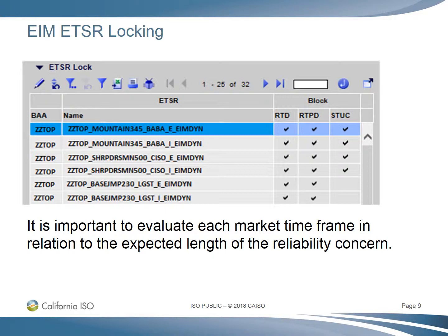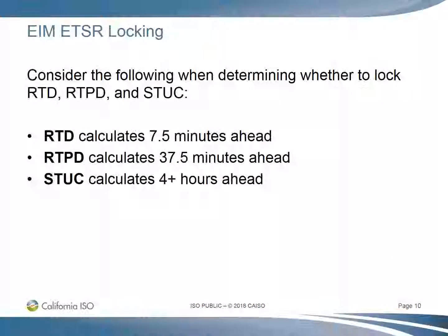In this example, you can see three dynamic ETSRs, each with its export and import direction noted, and they may be locked in the RTD market, the RTPD, or in the STUC. Things to consider when determining whether to lock in the RTD, RTPD, and STUC are: the RTD calculates seven and a half minutes ahead of the applicable time period; RTPD calculates 37 and a half minutes ahead; and STUC calculates four-plus hours ahead.